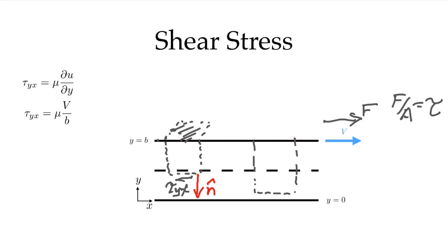This is one method we could use to measure the viscosity of the fluid. If we hold this plate at a known velocity and measure the force required to pull it, and we know the dimensions of the channel, then we've measured tau_yx for a given velocity, we know our channel dimension, and we can solve for the viscosity. This would be a simple viscometer. So that's Couette flow.